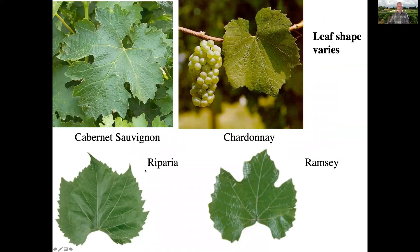Leaf shape varies quite a bit. Here we have a Cabernet Sauvignon leaf which has five lobes, deep sinuses, and deep serrations. Over here we have the Chardonnay leaf which has very little sinuses whatsoever — there's a large petiolar sinus but not such distinct lobes. There are lobes and the margins are more tooth-like. Here are two wild species. This is Vitis riparia which is from the northeastern United States, and again you can see the lobes are not so distinct.